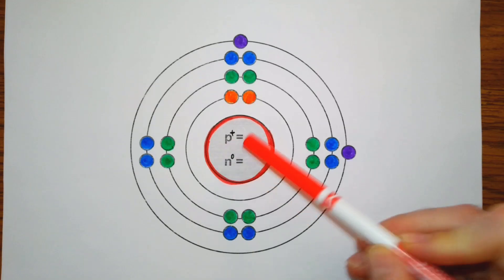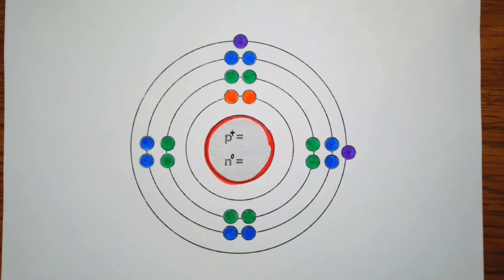So we have our protons equals a certain number, our neutrons equals a certain number. Then the electrons are going to be put into different orbitals.